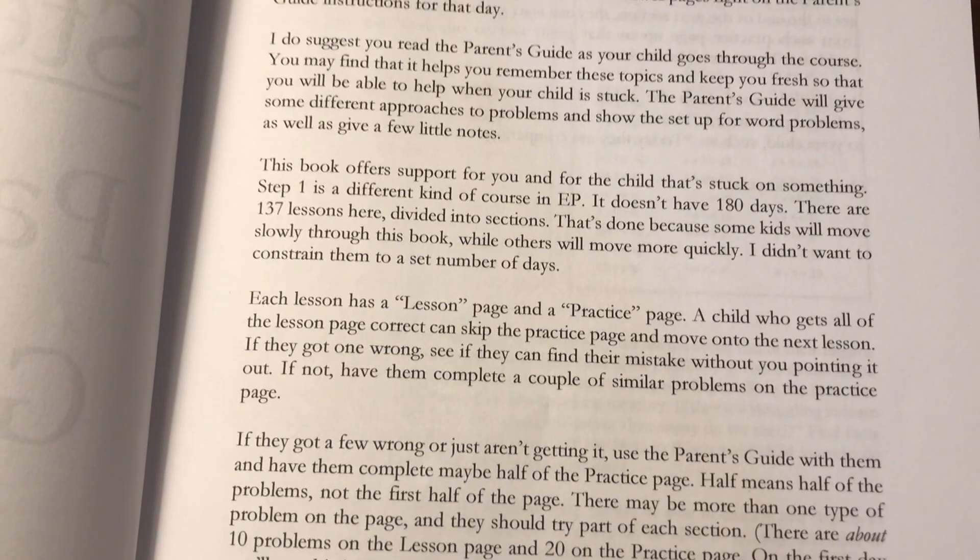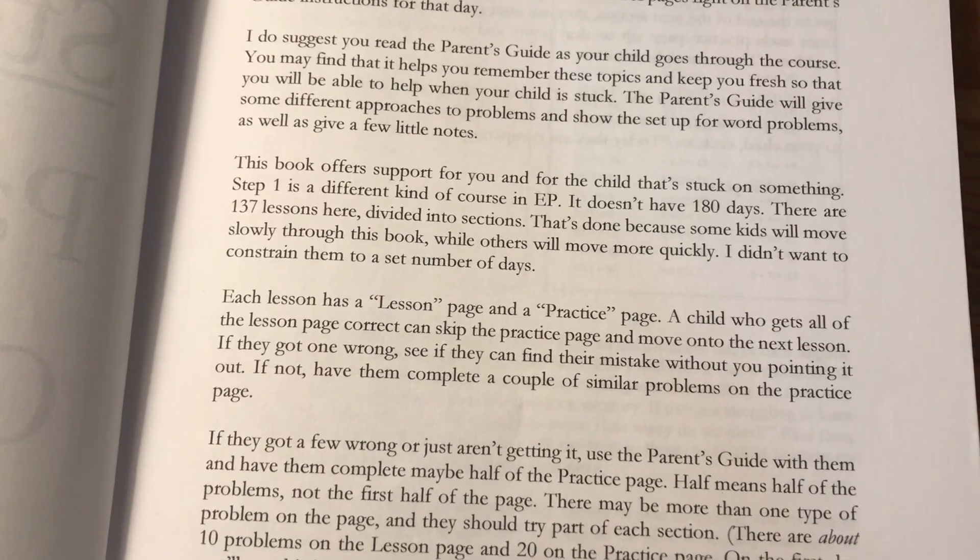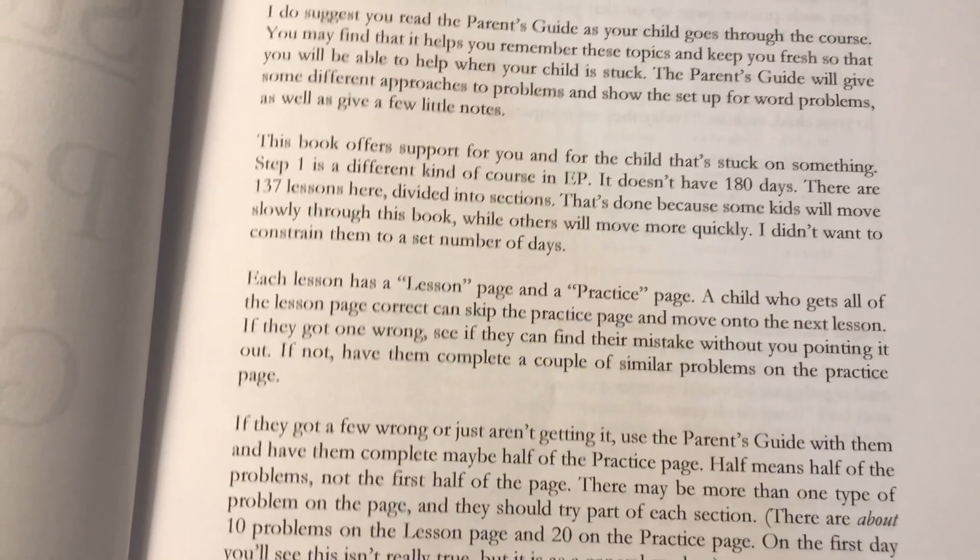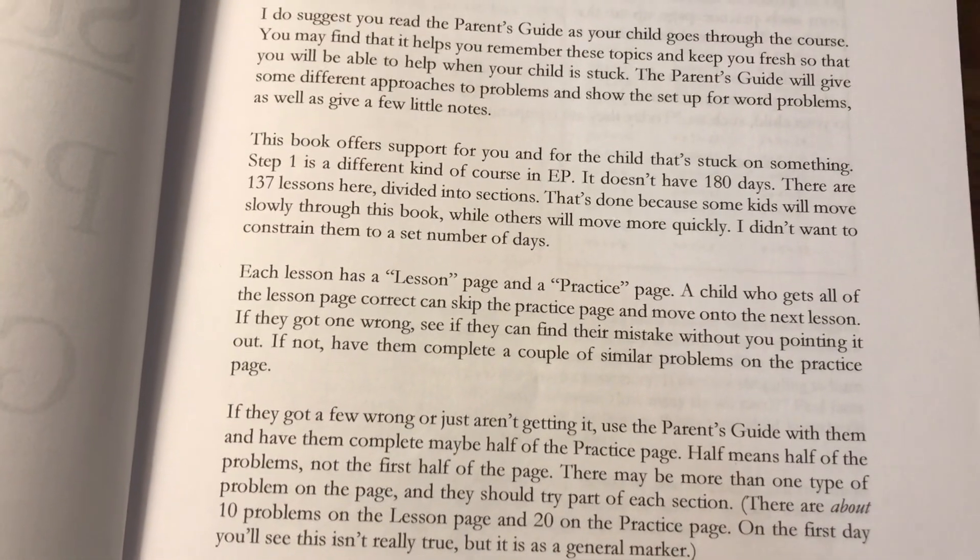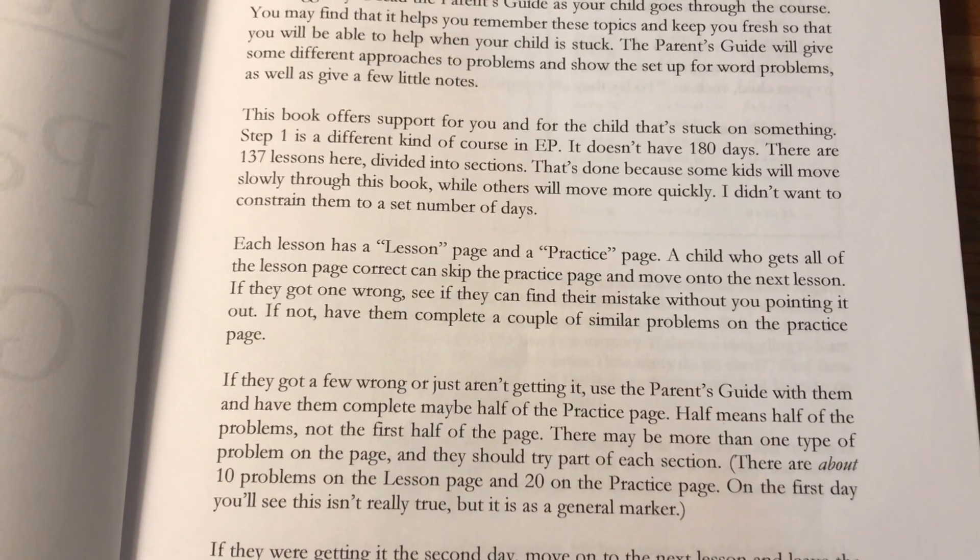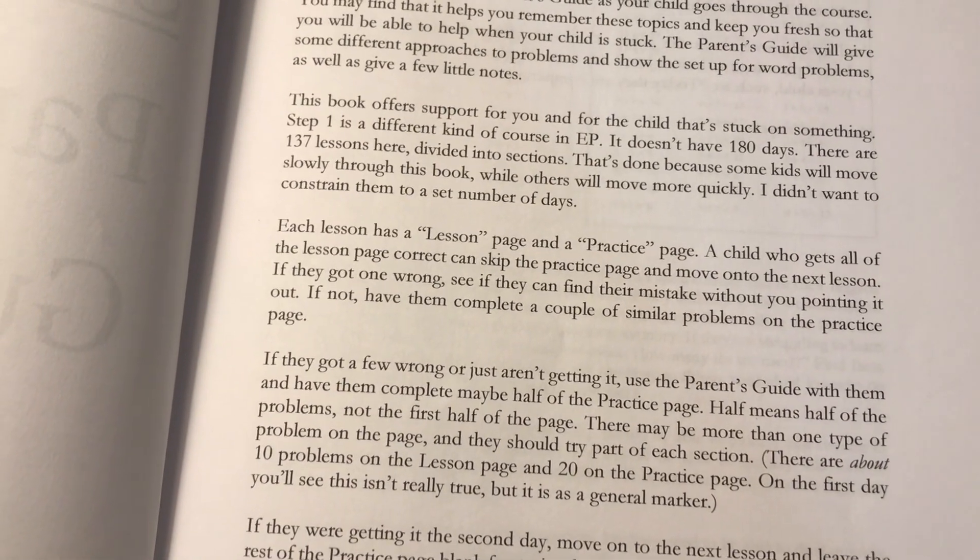This book offers support for you and for the child that's stuck on something. Step one is a different kind of course in EP. It doesn't have 180 days. There are 137 lessons here divided into sections. That's done because some kids will move slowly through the book while others will move more quickly. I didn't want to constrain them to a set number of days.